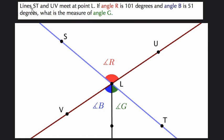In this problem, we're told that lines ST and UV meet at point L. I'm going to take a look at those lines right away, because with these kinds of geometry models, it's important to know where these lines are.